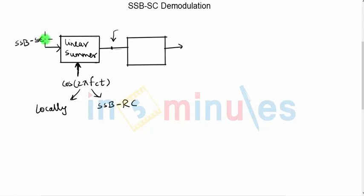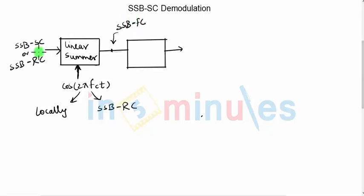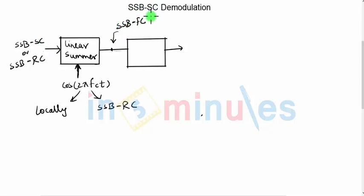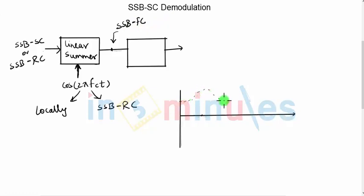The SSB signal doesn't have any carrier — it is a suppressed carrier — or even if it has the carrier, it will be of the form SSB RC where the carrier will be a very small amplitude signal. After you add a full carrier to the SSB signal, the output of the summer block will be SSB FC. Once you add the carrier signal to the incoming SSB signal and make it SSB FC, if you remember the waveforms of various versions of the AM signal, once the carrier is added to either a double sideband or single sideband signal, the waveform will get back the original envelope.